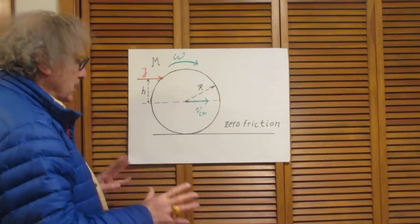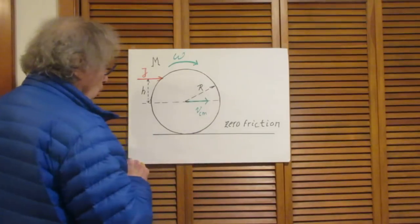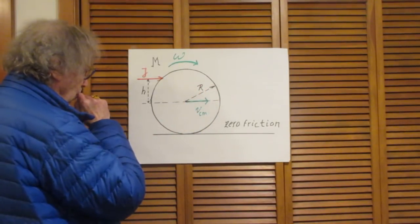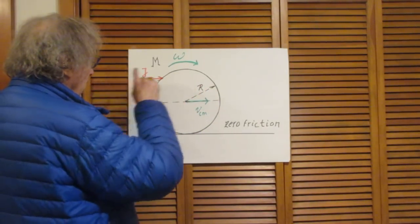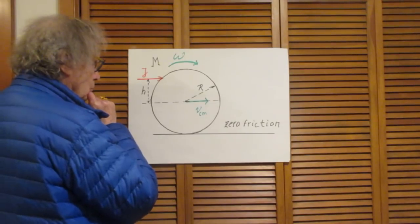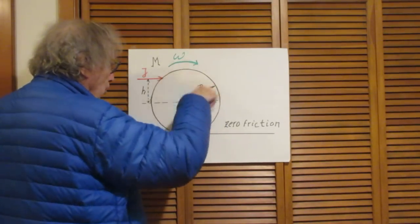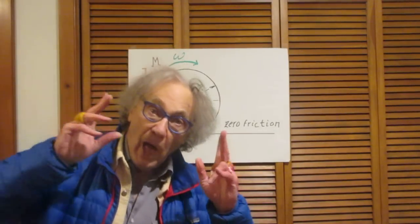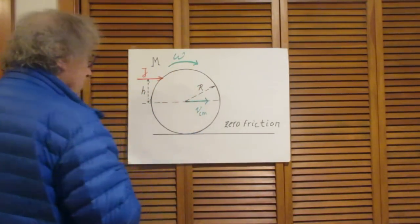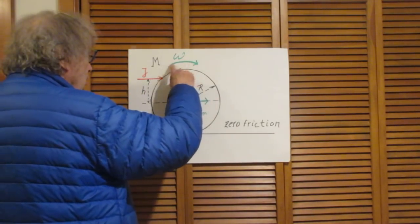As a result of that, two things will happen. There will be translation — you could call it slipping if you wish. The center of mass is going to move in this direction. But in addition, it will start to rotate about the center of mass with angular velocity omega. So two things happen: it will start sliding in this direction and it will start to rotate in this direction. And the question is, for this problem, what is the speed of the center of mass in this direction? And what is the value of omega?